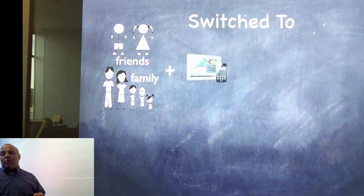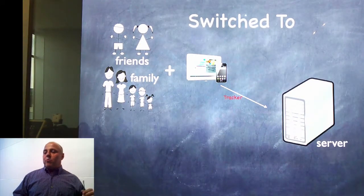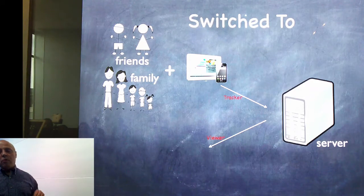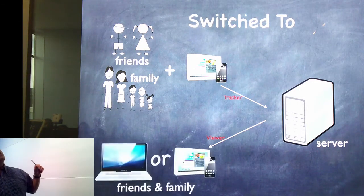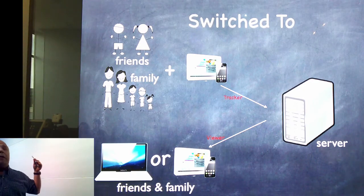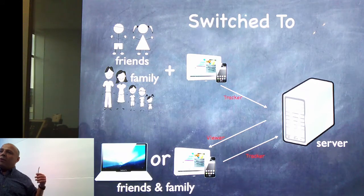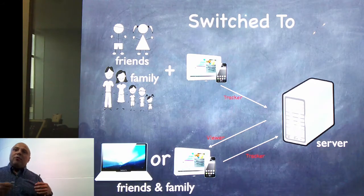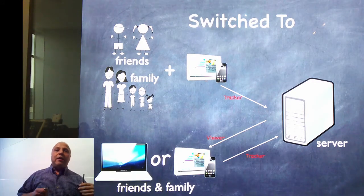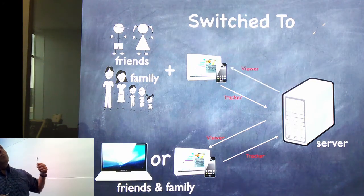The tracker in our mobile app would post the data to the server, and the server would push it back to the viewer. The viewer could be another phone, another tablet, or a desktop computer. And the reverse is true — if you're viewing where your friends are, you can turn the tracker on, and suddenly you're sending your location data to be viewed by others.